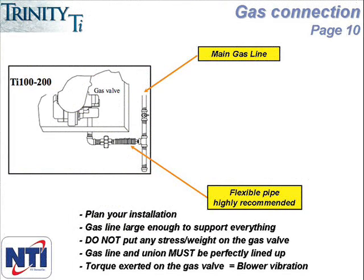When installing the gas line, the line enters the boiler at the bottom of the cabinet. Your main line should include a shutoff valve with a T-type handle that needs to be listed with a nationally recognized testing lab. You should also include a drip leg, and ideally the section between the main pipe and the union should use flexible gas pipe, provided local codes allow it.